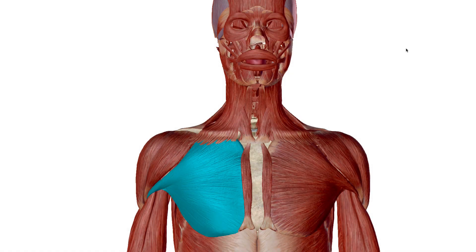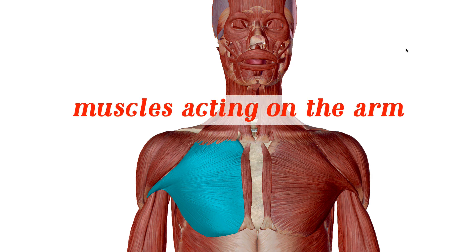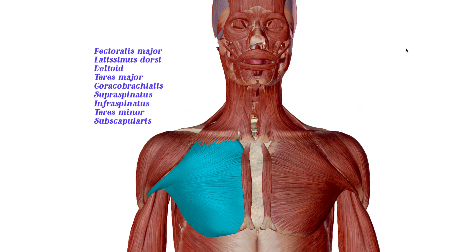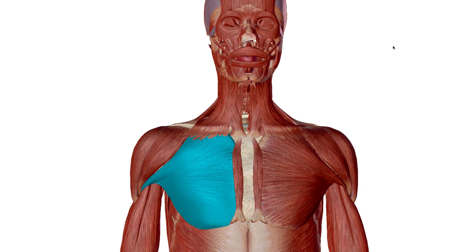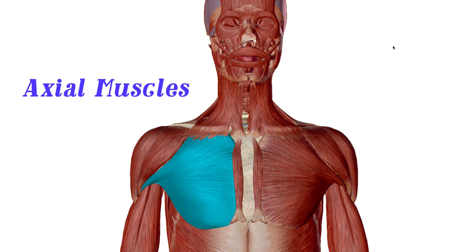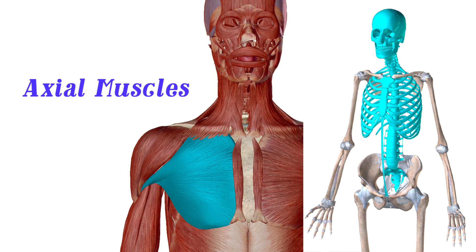Welcome to another anatomy and physiology video. We're continuing our discussion of the muscular system, highlighting the muscles that act on the arm. There are nine muscles total that cause arm movement. This video focuses on two axial muscles — the pectoralis major and the latissimus dorsi. They're called axial muscles because their point of origin is primarily on the axial skeleton, which includes your skull, spine, and sternum.